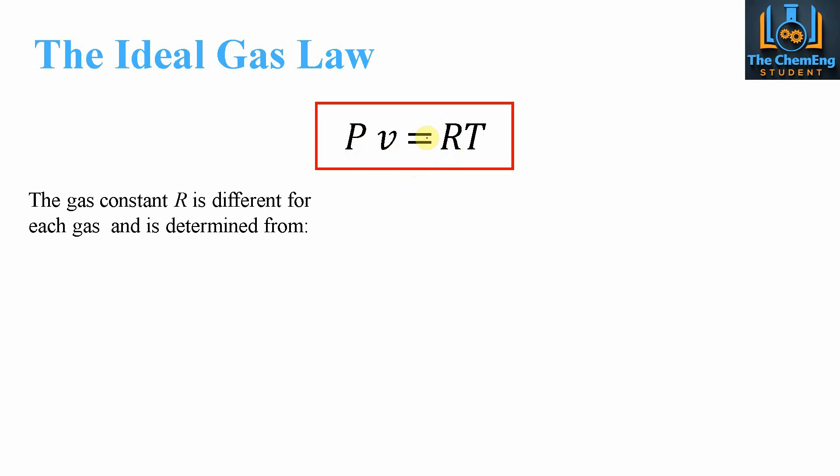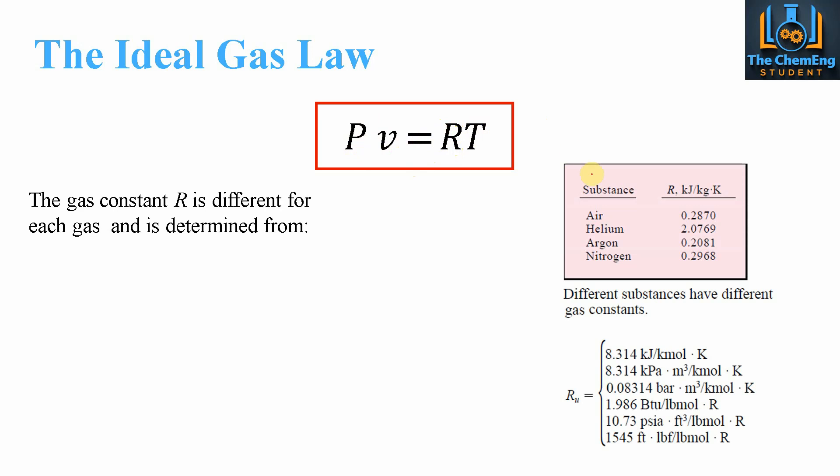So here what we have is the gas constant R. Now this is different for each gas and it can be determined through published data values. So we have to be careful of the units that we're using, because depending on our system, whether we are working in SI units or imperial units, the value is going to be different. So what we have here is we can see that the value of R for different substances can change. Air has a value of 0.287, whereas helium has a value of 2.0769. Again, you can get these values from published data.